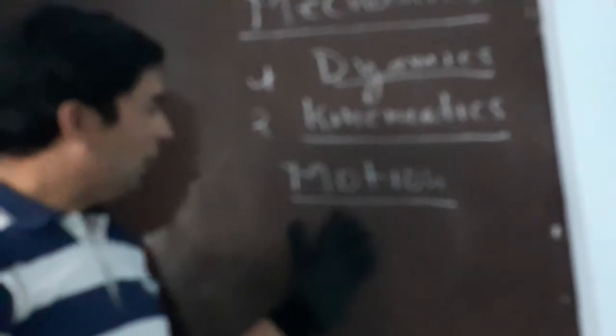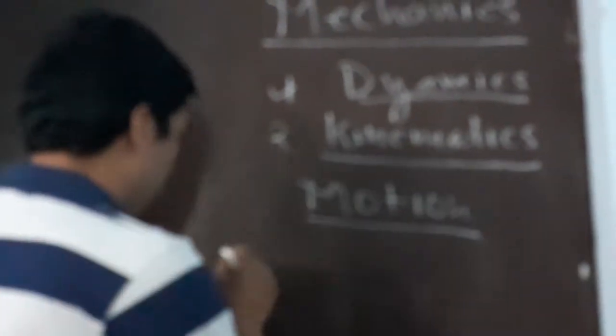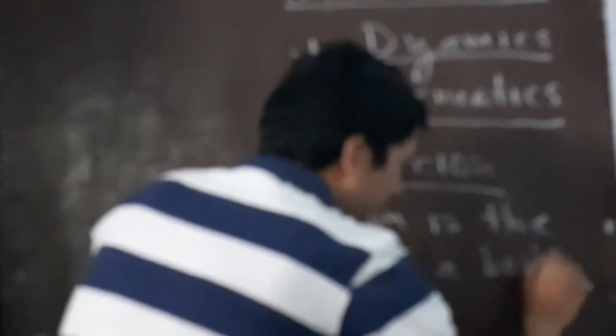Motion. The condition of moving of a body is termed as motion. That means when a body changes its position with respect to time or surrounding, then it is termed as motion. Motion is the moving of a body with respect to time or surrounding.